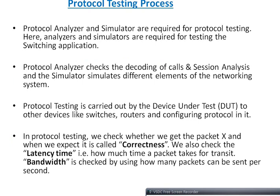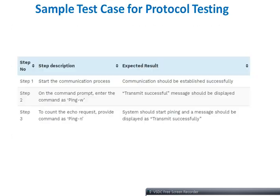For protocol testing, a protocol analyzer and simulator are required. These are used for testing switching applications. The protocol analyzer checks the decoding of a call and session, while the simulator simulates different elements of a networking system. Protocol testing is carried out from a Device Under Test (DUT) to other devices like switches and routers. During testing, we check correctness (whether packets arrive as expected), latency (time taken for packet transit), and bandwidth (packets sent per second).